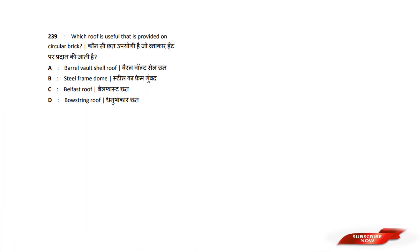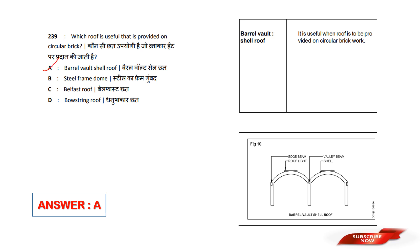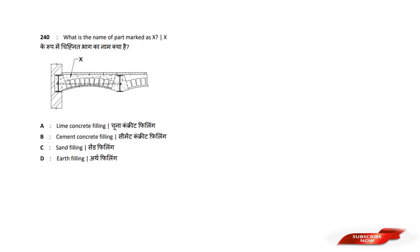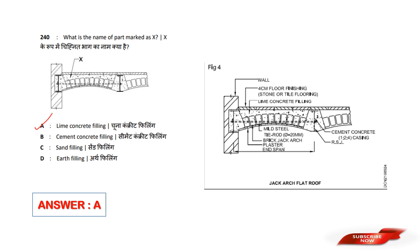Which roof is provided on a circular brick structure? Options are: A) Barrel Vault Shell Roof, B) Steel Frame Dormer, C) Belfast Roof, D) Bowstring Roof. Answer option A — Barrel Vault Shell Roof. That is the definition of a circular brick structure. What is the name of the part marked as X? Answer option A — Lime Concrete Filling.